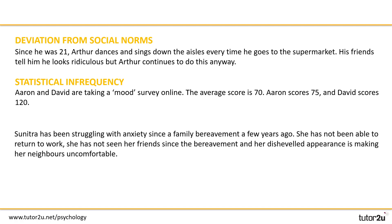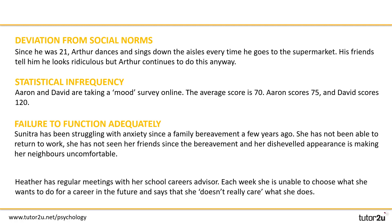Sinitra has been struggling with anxiety since her family bereavement and she's not been able to return to work, she's not seeing her friends, and she's dishevelled in her appearance, so this is indicating towards failing to function adequately. Heather has regular meetings with her school careers advisor but she doesn't really know what she wants to do in the future and doesn't really care, which hints at self-actualisation issues — so we're in the realms of deviation from ideal mental health.